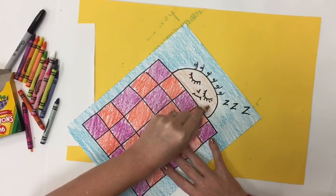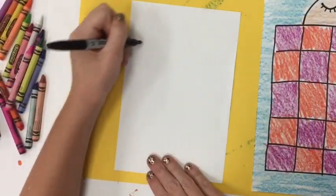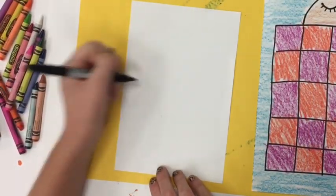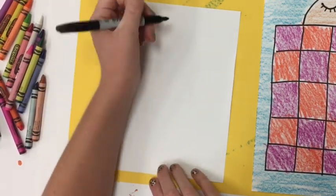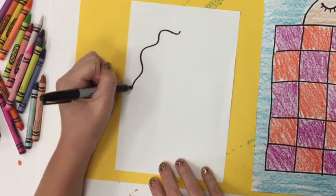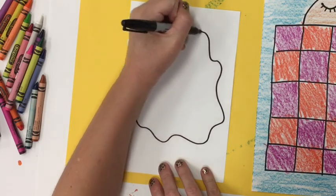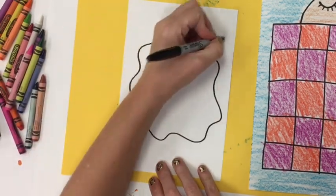Once you are done coloring yourself sleeping, we are going to get a second piece of paper and draw a large squiggle line for our monster. My wavy line is going to be almost as big as my paper.